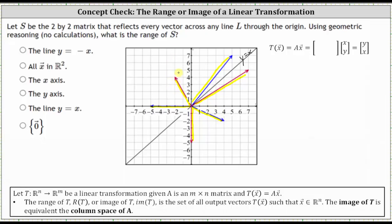So we're looking for the set of all possible output vectors under this transformation. Every vector in R2 that is an input vector will have a corresponding output vector also in R2. Every vector below the line will be mapped above the line, and every vector above the line will be mapped below. Therefore, the range of S, or the image of the transformation, is all vectors X in R2.